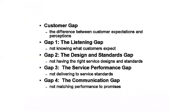The first GAP is the difference between consumer expectations and management perceptions of consumer expectations. The second GAP is the difference between the management perceptions of consumer expectations and service quality specifications. Managers will set specifications for service quality based on what they believe the consumer requires. However, this is not necessarily accurate.